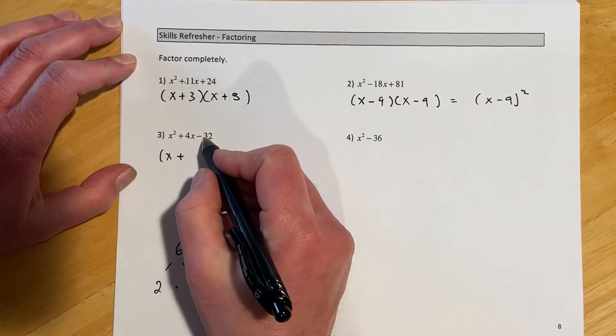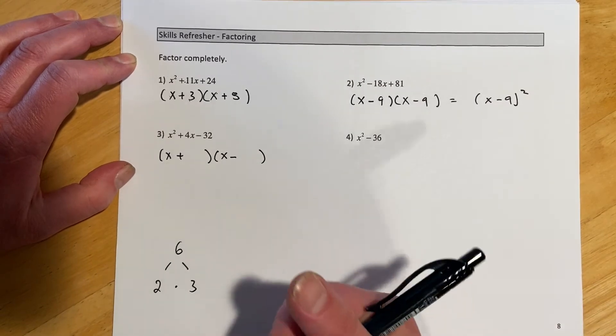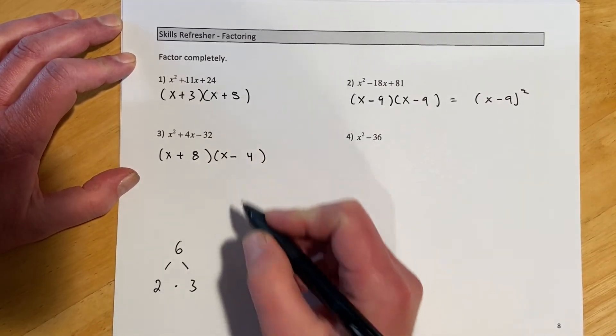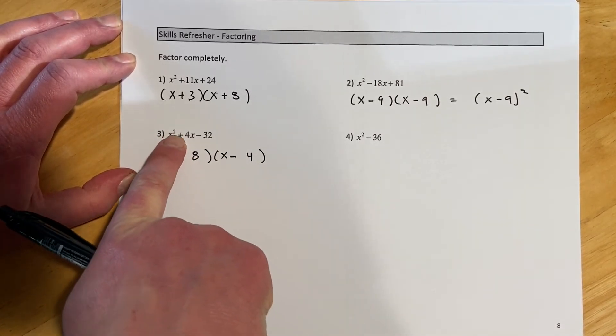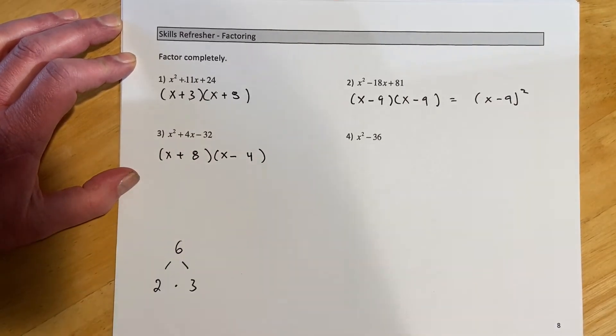I tend to think of it when it's a minus like that, I tend to think of it as the numbers are 4 apart because one of them is going to be negative and one is going to be positive. So in this case it'll be a plus 8 and a minus 4. Notice that the bigger number gets the positive sign because it's a plus in the middle. So if that had been a minus, I would put the 8 with the negative.